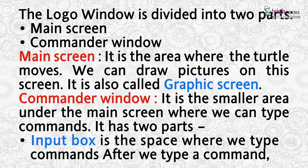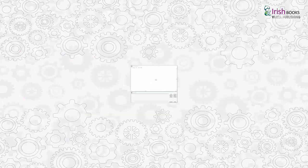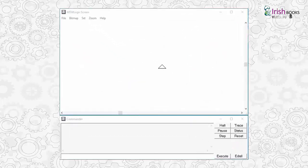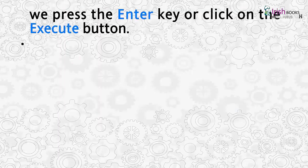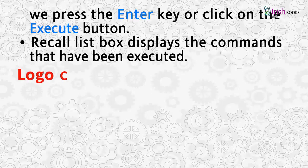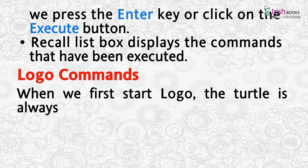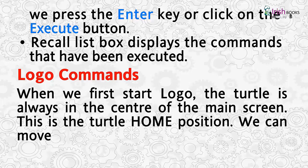The main screen is the area where the turtle moves. We can draw pictures on this screen. It is also called the graphic screen. The commander window is the smaller area under the main screen where we can type commands. It has two parts: the input box, which is the space where we type commands. After we type a command, we press the Enter key or click on the Execute button.